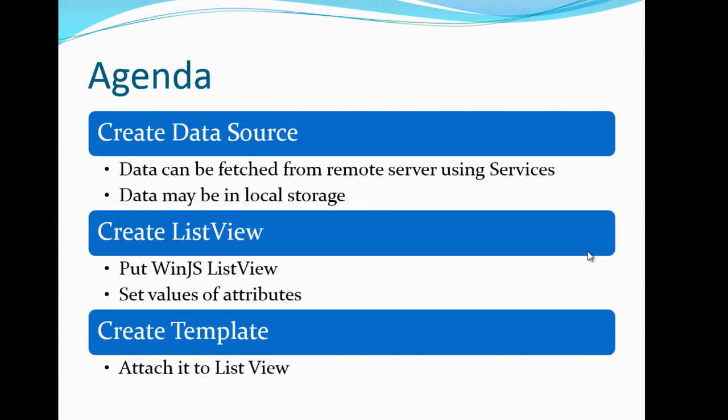Once you have data in your application, the next thing is to put a WinJS ListView control on your HTML page. After putting the ListView control you need to set necessary attributes like data source and whether you want to display ListView in a grid manner or a list manner. Once the data source and ListView are in place, the third and most important thing is to create a template for the ListView, which determines how you want to display data. So let us jump into the demo.